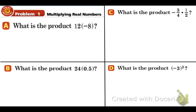In example one, part A, we have 12 times negative 8. Well, we have a positive and a negative. That means our answer is definitely going to be negative. So we have negative 96 as our answer. In part B below, we have two positives. That means we're going to have a positive answer. And another way to think about 0.5 is 1 half, 24 times 1 half, which is just 24 divided by 2. And what's half of 24? The answer is 12.